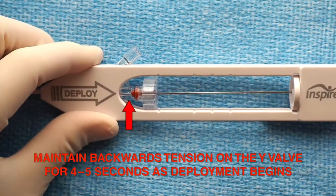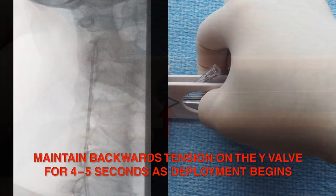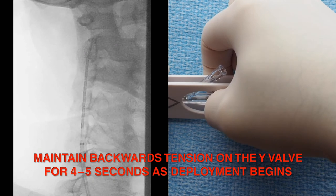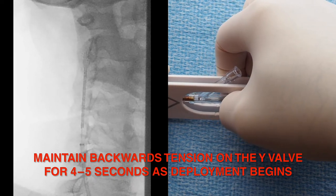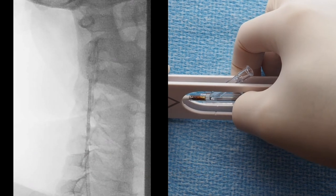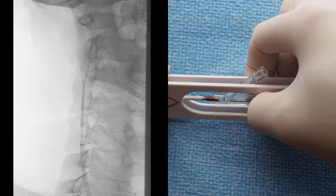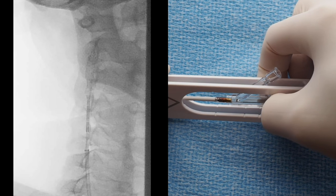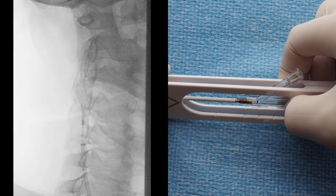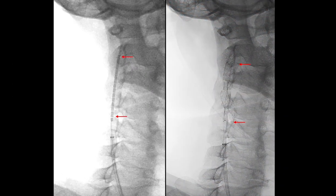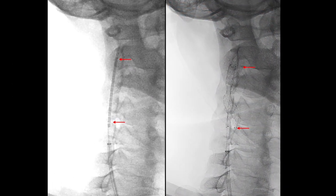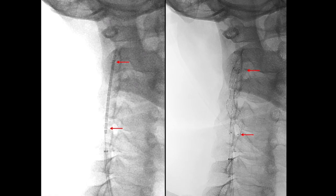Deploy the stent by holding the hemostatic valve body and slowly pull it back within the handle. Note that it may take a few seconds for the deployment to start. Continue to pull back until the hemostatic valve has reached the end of the handle and the stent is fully deployed. SeaGuard does not elongate or foreshorten, hence the proximal and distal ends will open at the intended location.